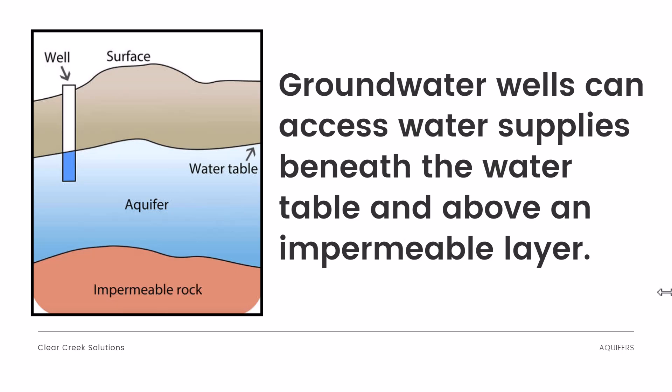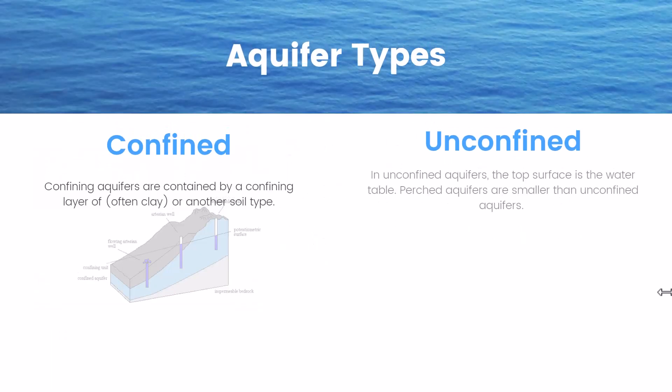Groundwater wells can access water supplies beneath the water table and above an impermeable layer. You can see here we have a well; there's an impermeable layer, then we hit the water table where the aquifer is, and then there's impermeable rock beneath that, not allowing the water to go beneath it. We penetrate the soil and allow the well to go into the aquifer. The aquifer fills up because of the water cycle — it rains, goes into the soil, and then down through the water table between that impermeable rock layer.